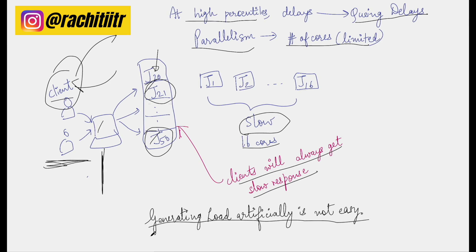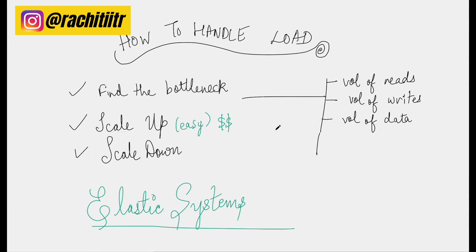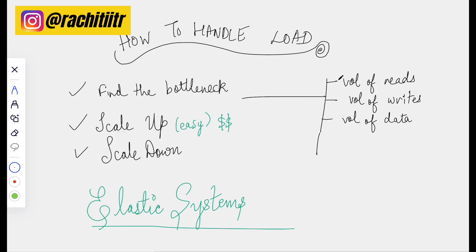At the end, I also want to talk about how to handle load when your system's performance is not good. First you have to find the bottlenecks — figure out which system is causing the delay. Once you have the bottleneck, you can figure out whether the problem is due to a volume of reads, a volume of writes, or a large volume of data flowing through — like gigabytes and terabytes. Different kinds of problems have different architectural solutions; there is no single magic solution to fix all of them.